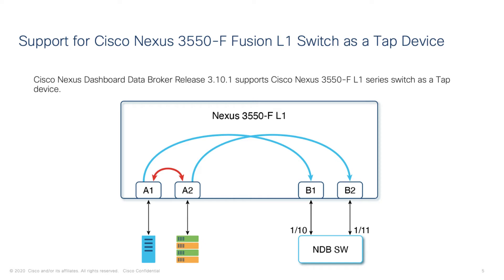Traffic from the mirror ports reaches the edge port TAP ports of the NDB device. The mirror ports of the TAP device and edge port TAP ports of the NDB device are physically connected.